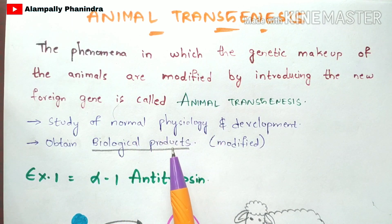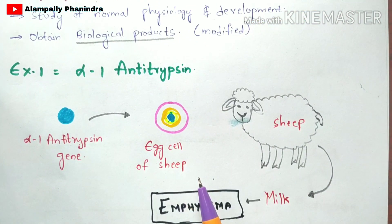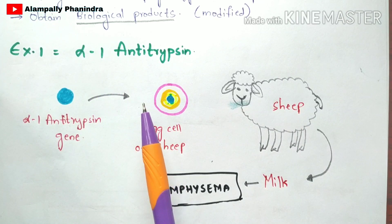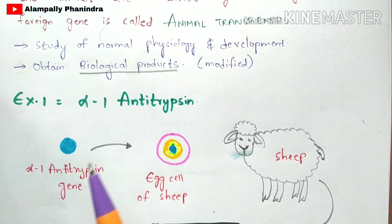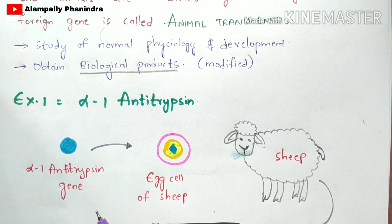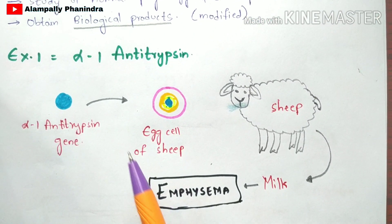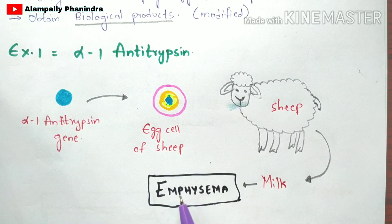Let us look at two examples to understand how these biological products are modified. In example one, we take the gene alpha-1 antitrypsin. This is one of the most important genes, mainly responsible for curing a disease called emphysema. Transgenic animals are also used to study genes responsible for particular diseases, and alpha-1 antitrypsin is used to cure emphysema in human beings.